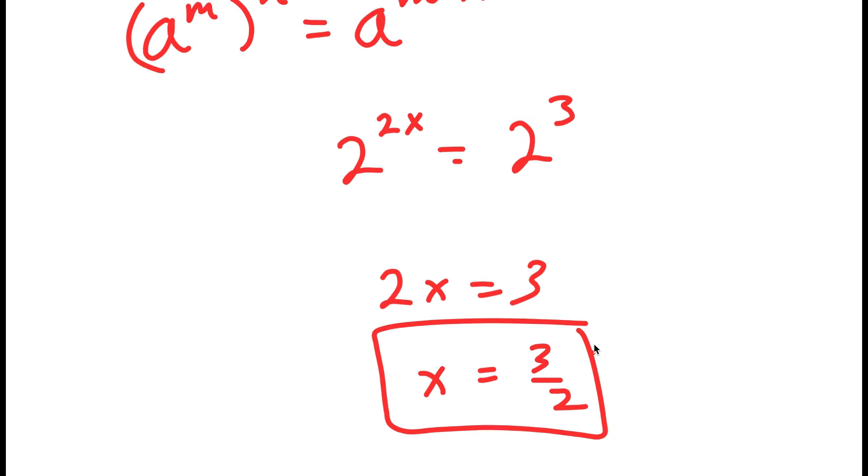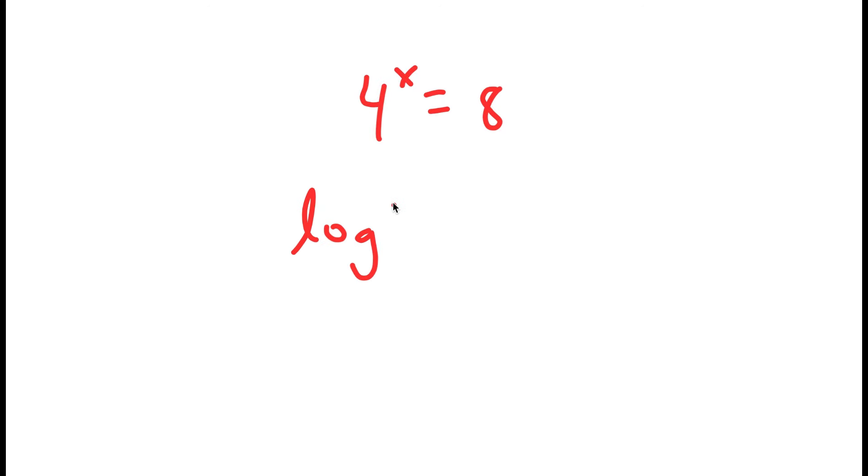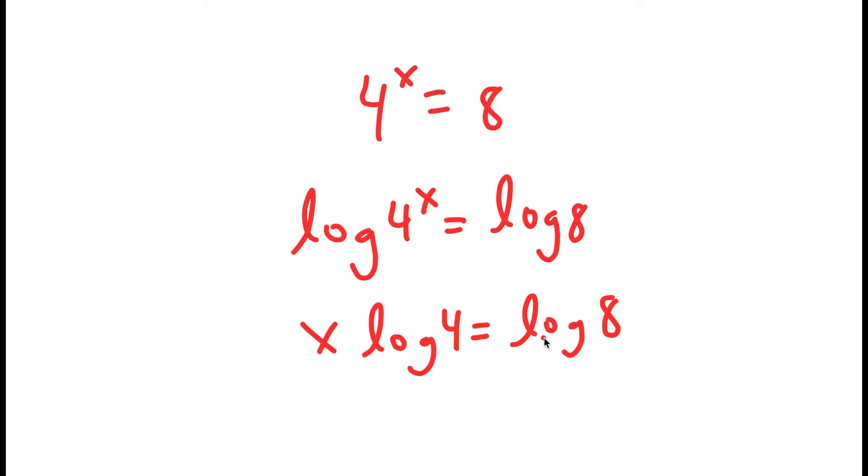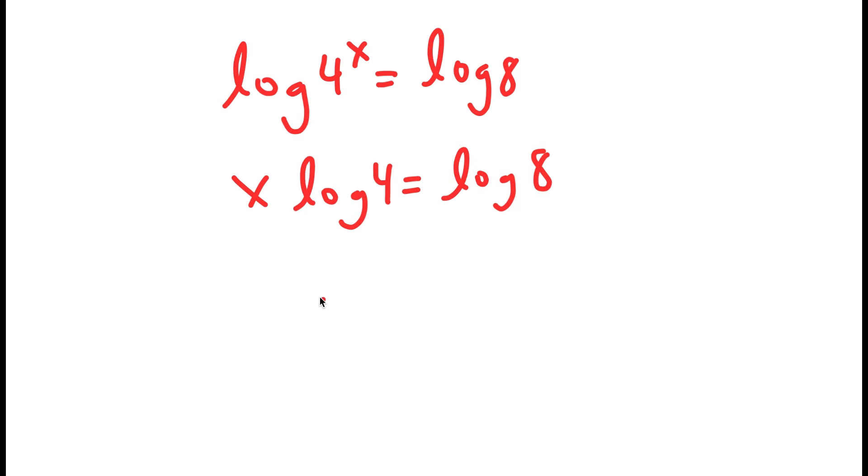You can also, from 4 to the power of x is equal to 8, take the log on both sides—you can use logarithms. So I get log 4 to the power of x is equal to log 8, meaning x times log 4 is equal to log 8, and x is equal to log 8 over log 4.